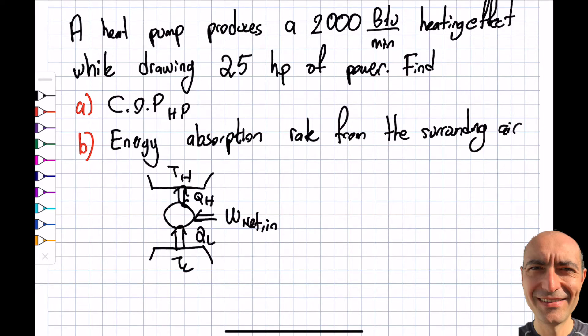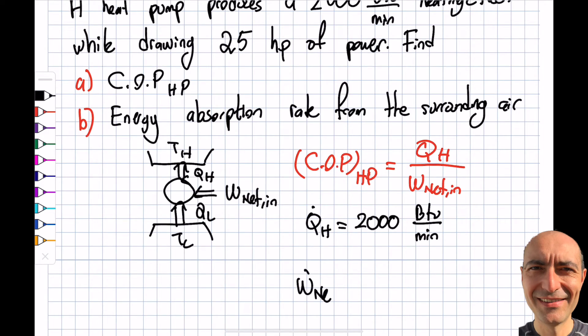Let's write the COP of a heat pump. The goal is to have the highest Q_H possible, and what I need to pay is W_net_in. The heat pump produces heating effect, so it's talking about Q_H. Q_dot_H is given as 2000 BTU per minute, and W_dot_net_in is 25 horsepower. You can clearly see there needs to be some conversion here.